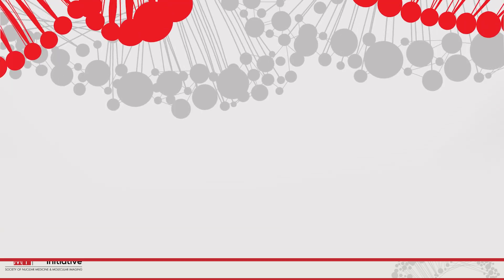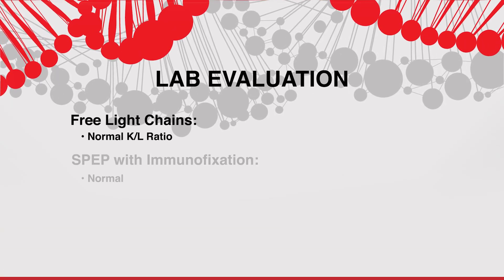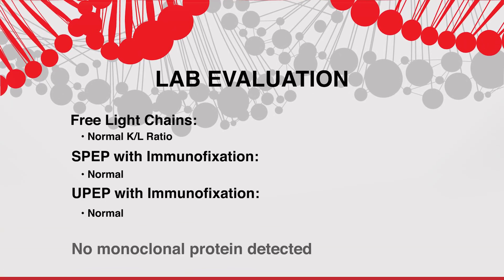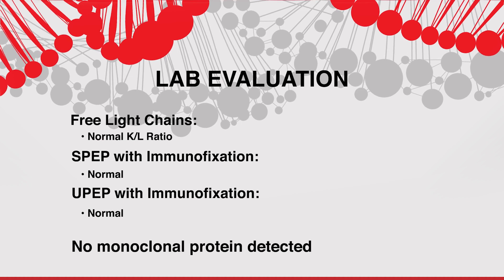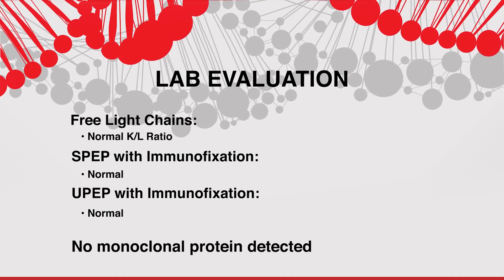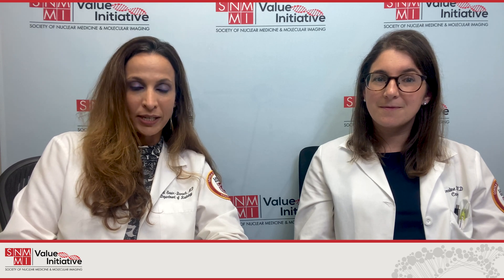We started with a laboratory evaluation including free light chains, serum and urine protein electrophoresis with immunofixation. All of this blood work came back within normal limits. When a patient presents with negative free light chains in their blood or urine, we are excluding the suspicion of AL amyloidosis. The patient was then sent to the nuclear medicine division for evaluation of ATTR amyloidosis within the heart.